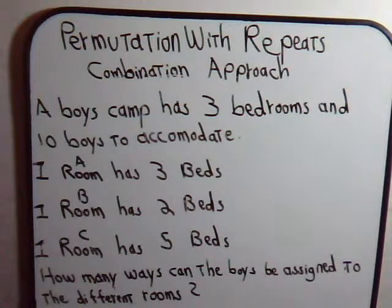We say that a boys camp has three bedrooms and ten boys to accommodate, and one room, we'll call it room A, has three beds available, room B has two beds available, and room C has five beds available, and we are asked, how many ways can the boys be assigned to the different rooms?